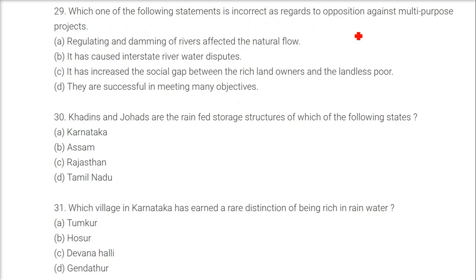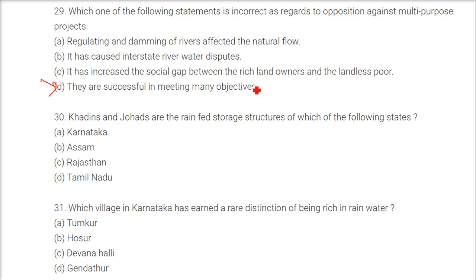Which one of the following statements is incorrect as regards to opposition against multipurpose projects? If the statement says they are successful in meeting many objectives, that is not an argument against — you are actually giving a favorable argument, not opposing it. So D is the answer.